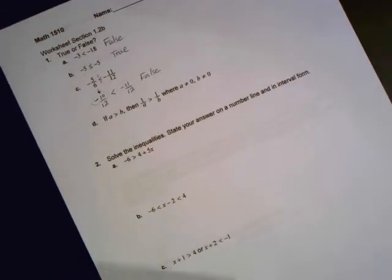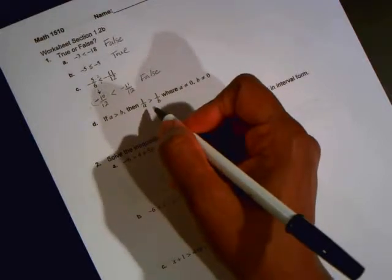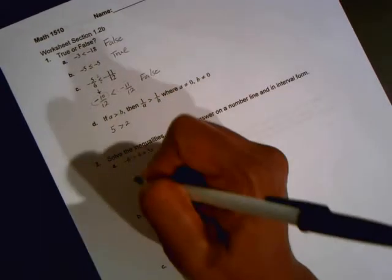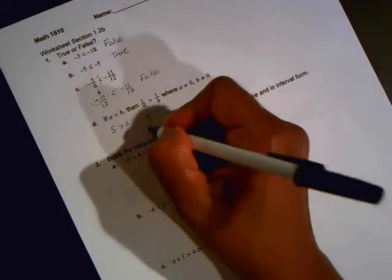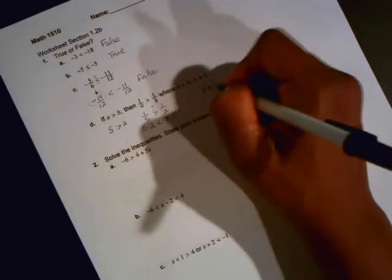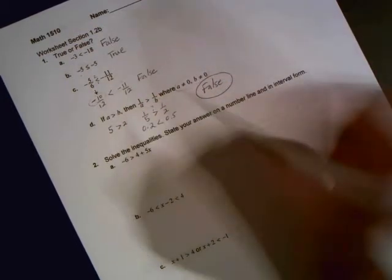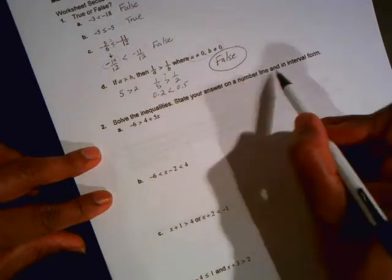The next question is if a is bigger than b, then 1 over a is greater than 1 over b. To understand this, let's put some numbers in context. 5 is greater than 2. But is 1 fifth greater than 1 over 2? This is 0.2. This is 0.5. It's clearly not true. So that's false. Notice the condition that a and b are non-zero because you cannot divide by 0. The next few questions are just solving inequalities. So let's see. It says here, solve the inequalities. State your answer on a number line and an interval form.